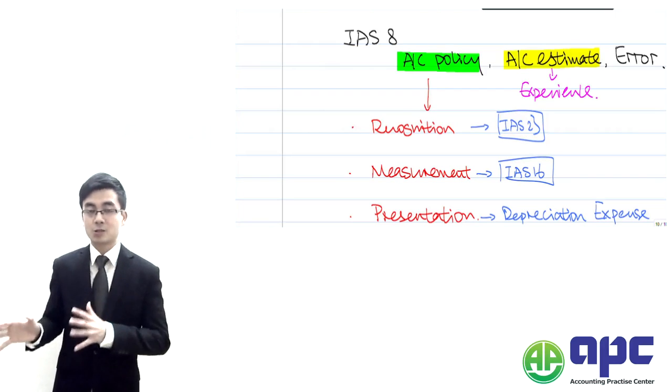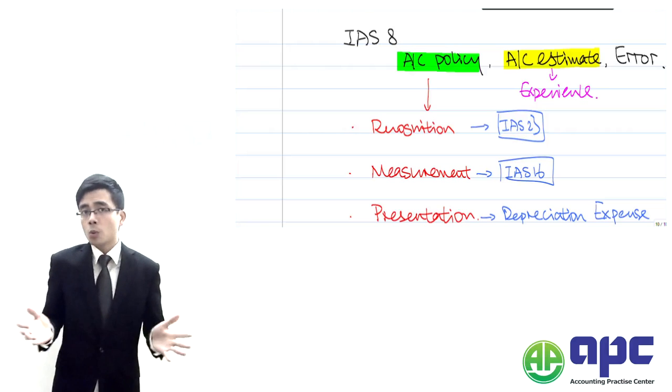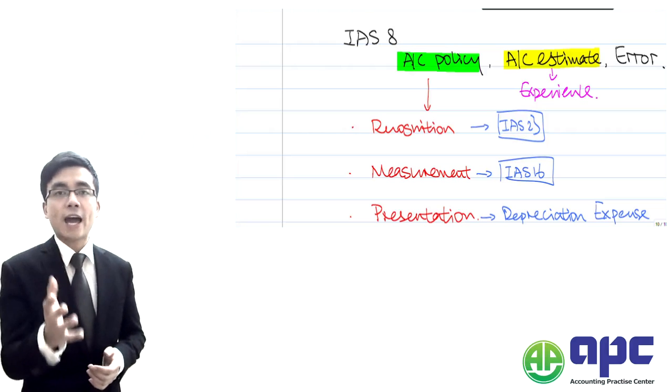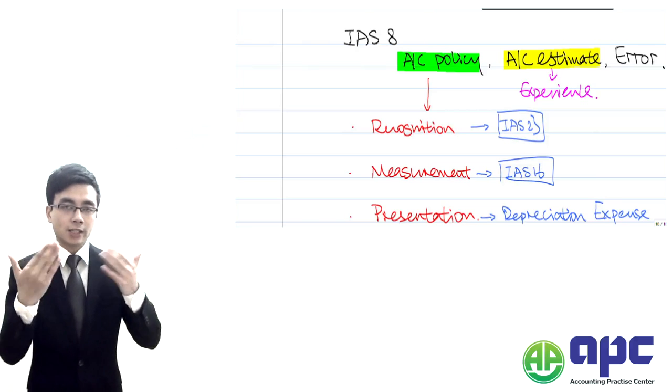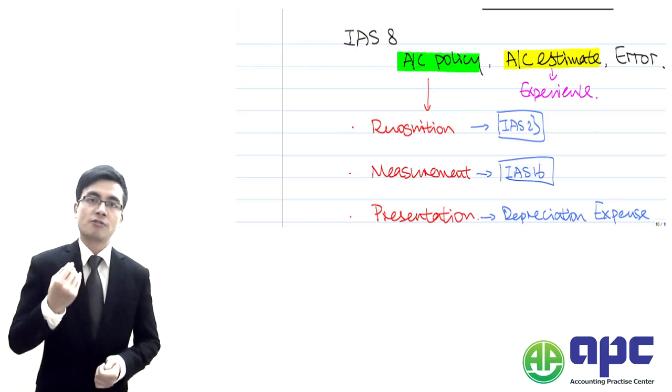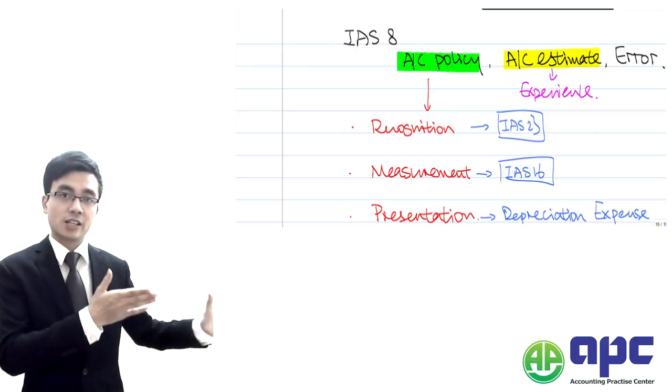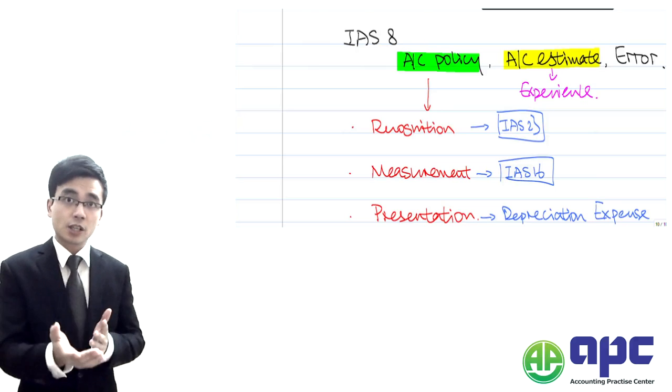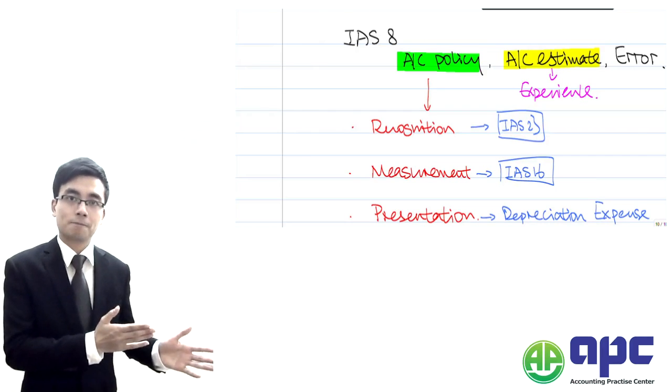That's for accounting policy and accounting estimate. What about errors? The errors we're talking about are if in the current year financial statement we found last year's financial statement contains an error and that's a material error, we need to correct it.